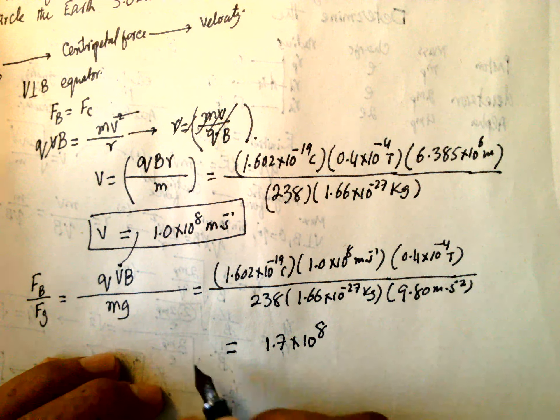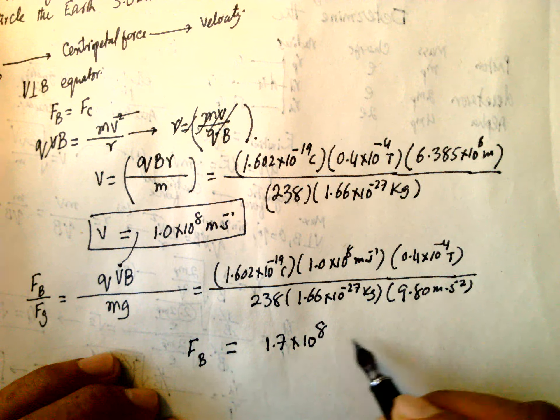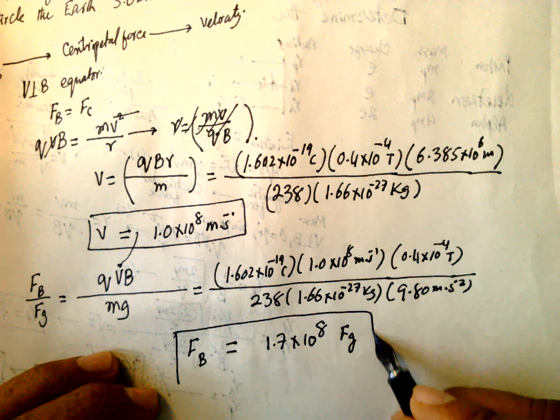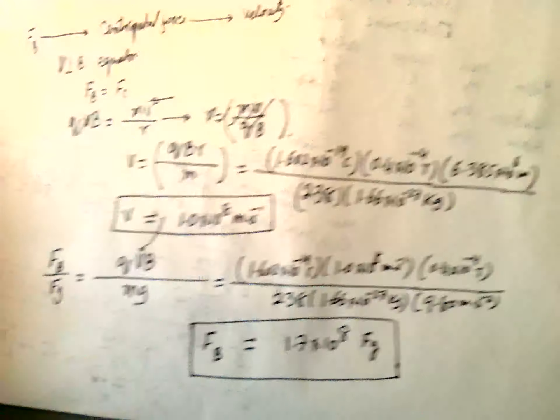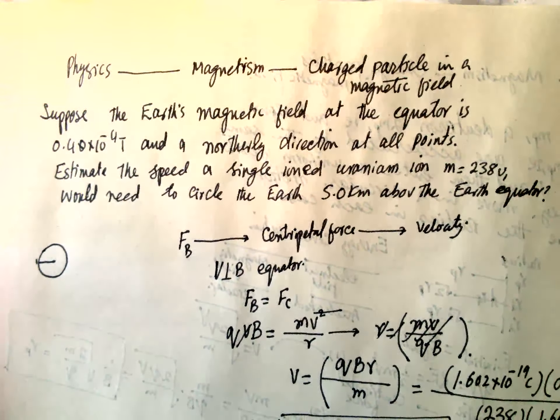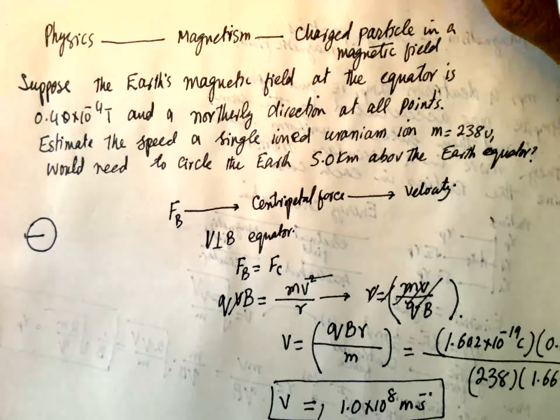Suppose the Earth Magnetic Field at the Equator is 0.4 into 10 power minus 4 Tesla and is a northerly direction at all points. Estimate the speed of a single ionized uranium ion, M is equal to 238 unit, would need to circulate Earth 5 km above the Earth Equator.